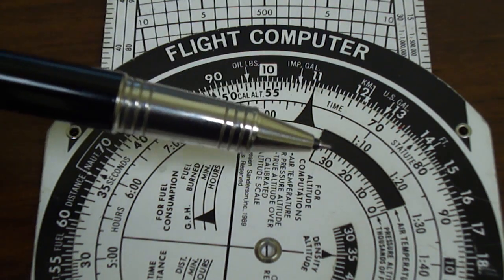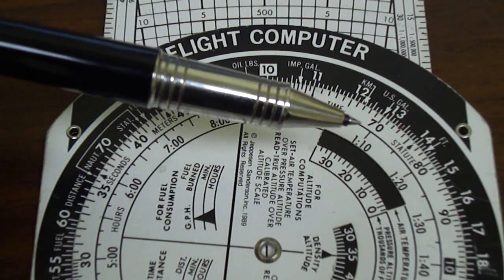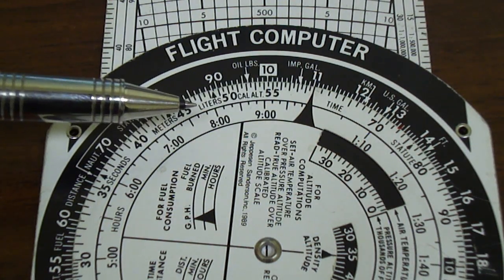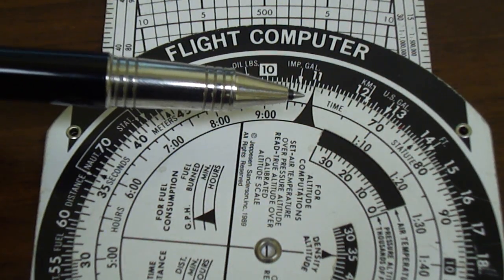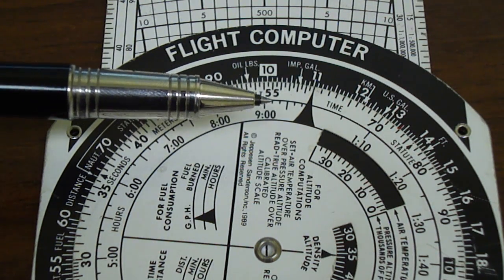First let's assume that we're going to travel for 70 minutes. So all we have to do is look on the inside rotating scale, and remember the inside scale always is time.